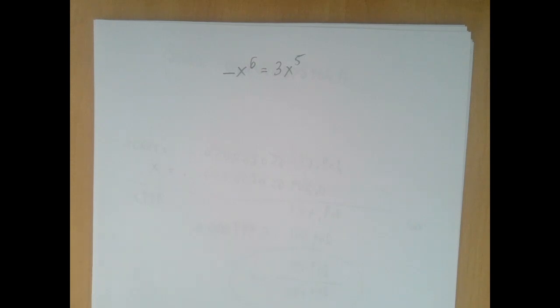Both sides are divisible by x, but do not divide by x. What is the worst thing we can do in mathematics? It's division by zero.